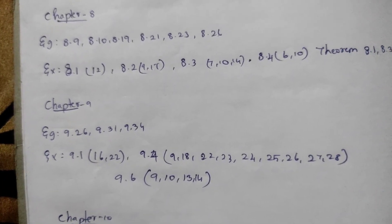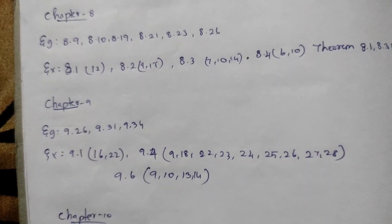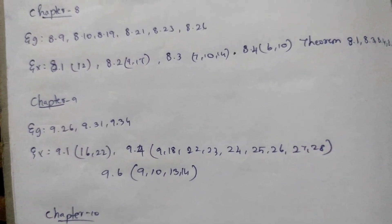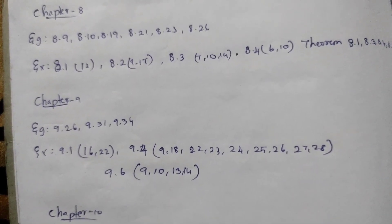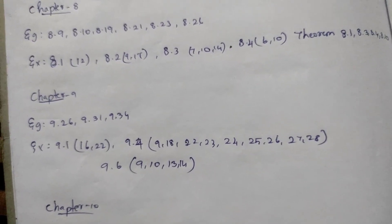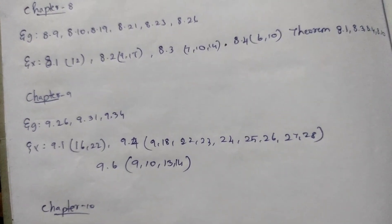Let's look at the examples. 9.1: 16, 22. Example 9.4: 9, 18, 22, 23, 24, 25, 26, 27, 28. Example 9.6: 9, 10, 13, 14.